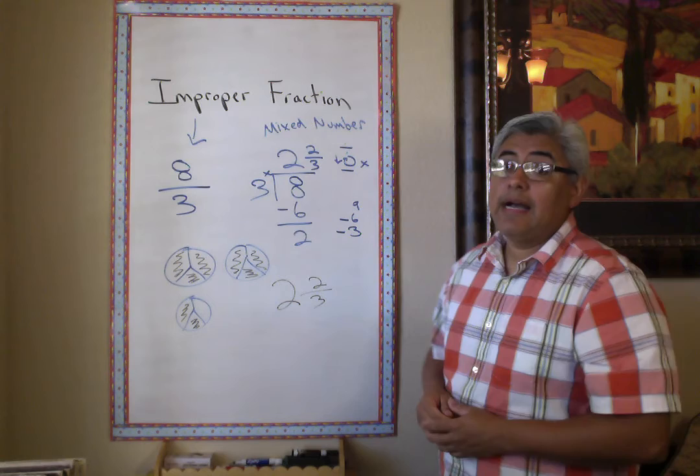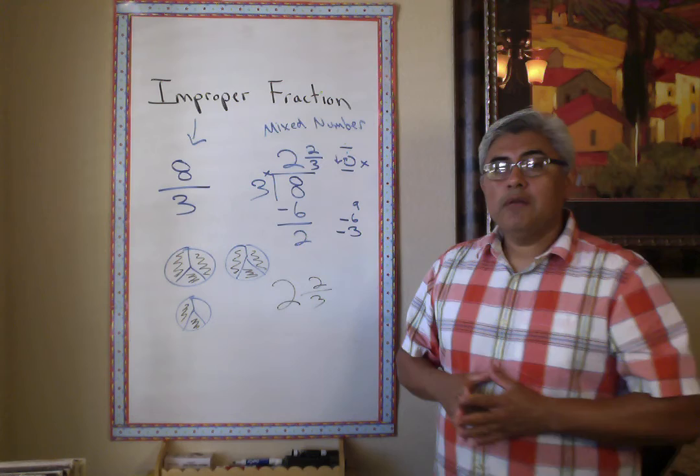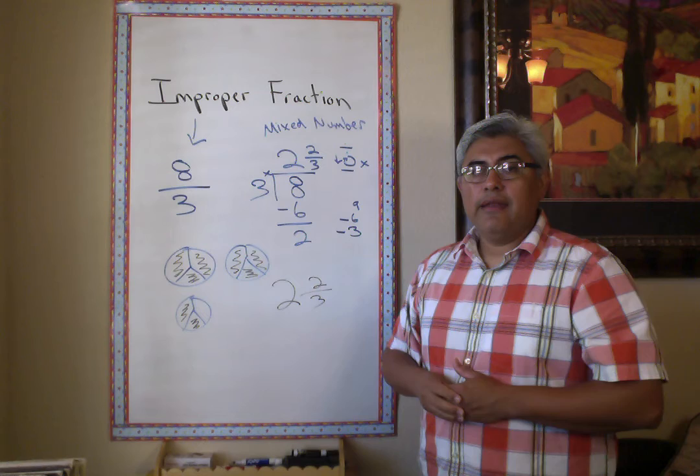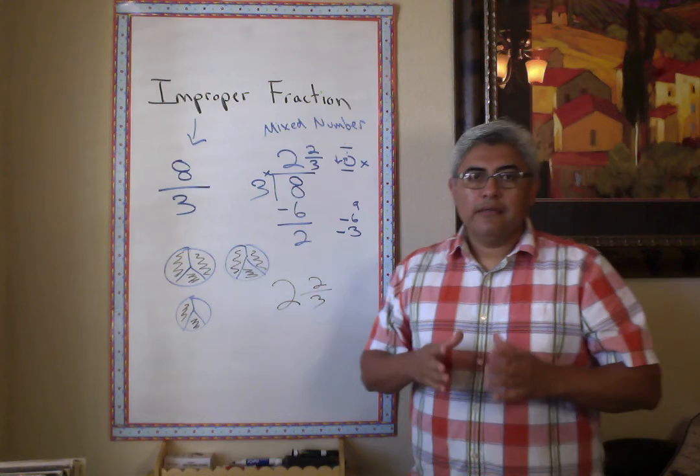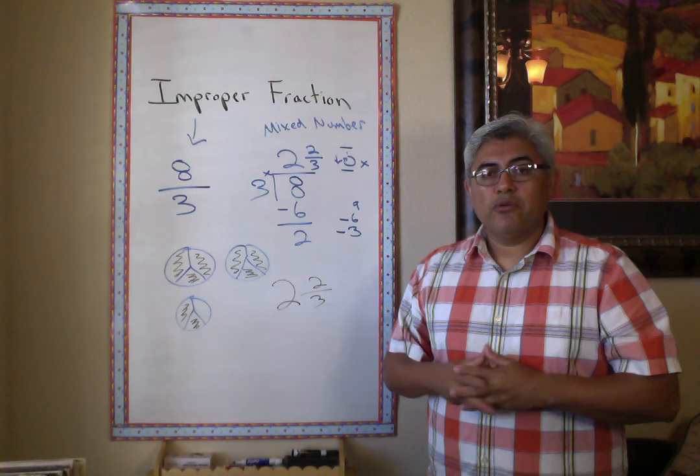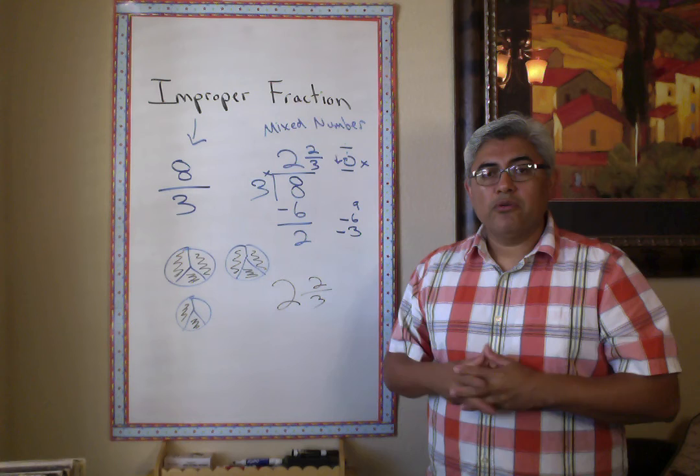That's the easiest way to turn an improper fraction into a mixed number — just use division. But remember to follow your steps: divide, multiply, subtract, and bring down. I hope this helps you turn improper fractions to mixed numbers. If there are any questions, please feel free to text me, call me, or email me, and we can work some more problems and get more practice. I hope you enjoyed this lesson — keep on working on math, it's going to help you.